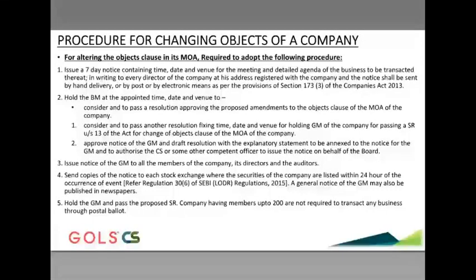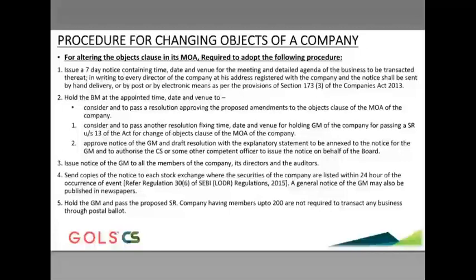For altering the objects, the procedure is: hold the board meeting. Issue a seven-day notice containing the time, date, venue of the meeting, and detailed agenda. The seven-day notice can be curtailed to a shorter notice based on the consent of all board members — generally done in private limited companies. What your Articles of Association says about the board meeting notice length is of primary importance. Certain companies make it three days or two days also. If nothing is provided, we consider seven days. Hold the board meeting, consider and pass the resolution approving the proposed amendments in the object clause. Consider and pass another resolution fixing date, time, etc.